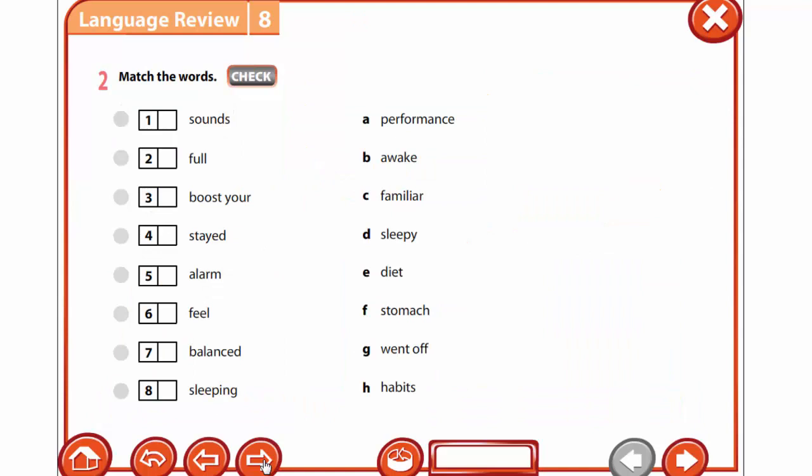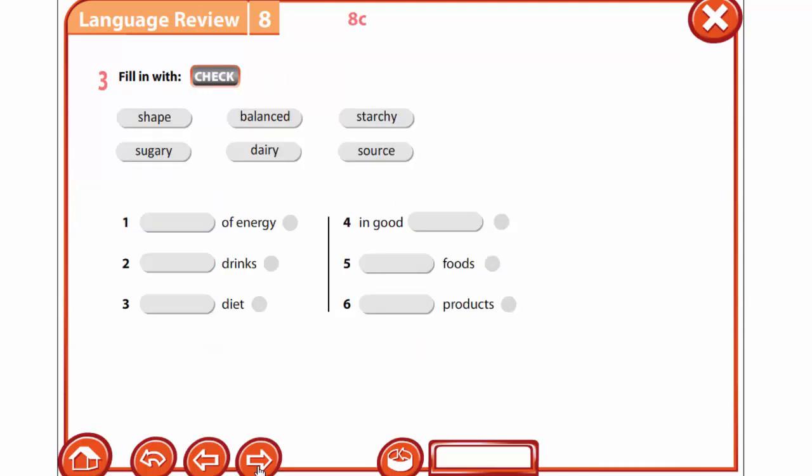Exercise 2: You are to match the words, then use five of them to complete the sentences. Start with matching. For example... now fill the sentences. Exercise 3: Fill in with shape, balanced, starchy, sugary, dairy, source. If you have...